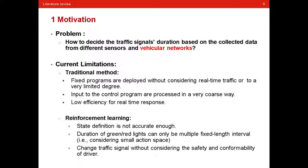As for reinforcement learning methods for traffic light control, in past studies, the state definition is not accurate enough, and the duration of green and red lights can only be multiple fixed-length intervals. That means the reinforcement learning in this way only considers small action space.